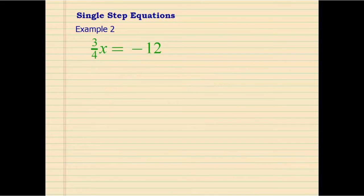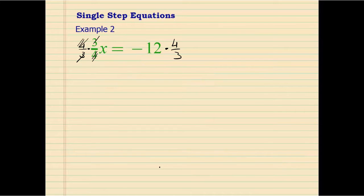Here is the second example. In this example we need to leave the variable alone by getting rid of the fraction 3 fourths. One way to get rid of a fraction is to multiply it by its reciprocal. The reciprocal of 3 fourths is 4 over 3, so if we multiply each side of the equation by 4 over 3, these will simplify.